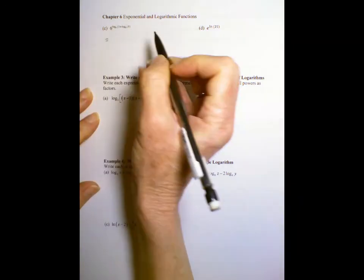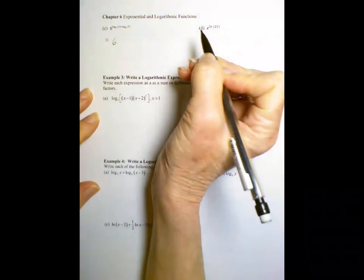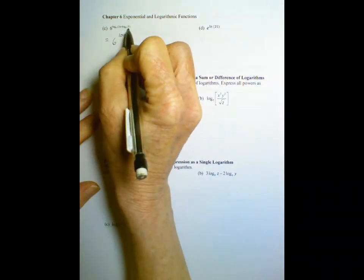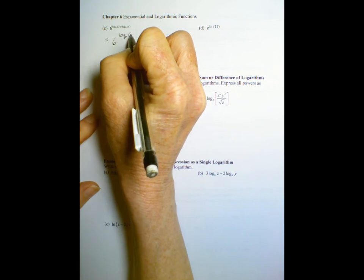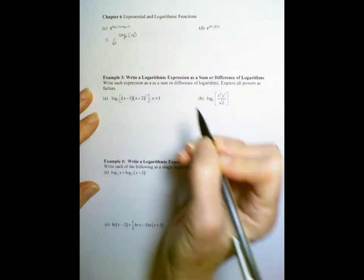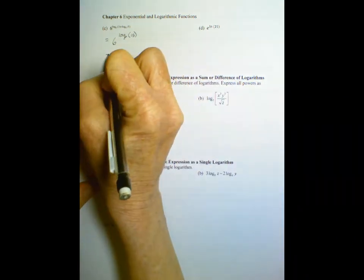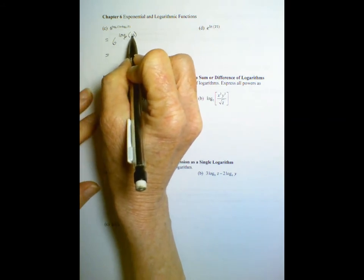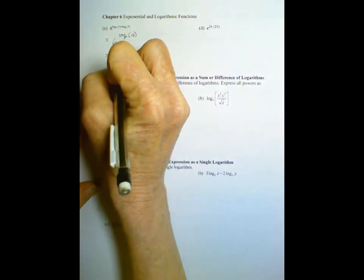So we can combine those two logs in that exponent. When we add, that means we write it as a product. 3 times 5 is 15, right? And then we have a property that says a to the log base a of m is just equal to m, so this is 15.